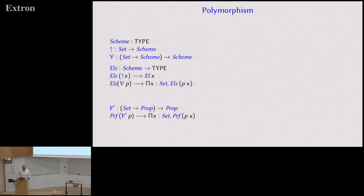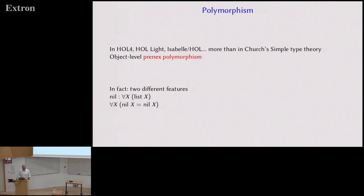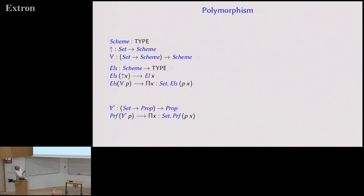For example, 'for all X, list of X' is a scheme. List-of-X is a set; you embed it as a scheme with zero quantifiers using the injection from set to scheme. Then you abstract over the variable X and apply the for-all quantifier, giving a function of type set arrow scheme. Applying the quantifier gives you a scheme.